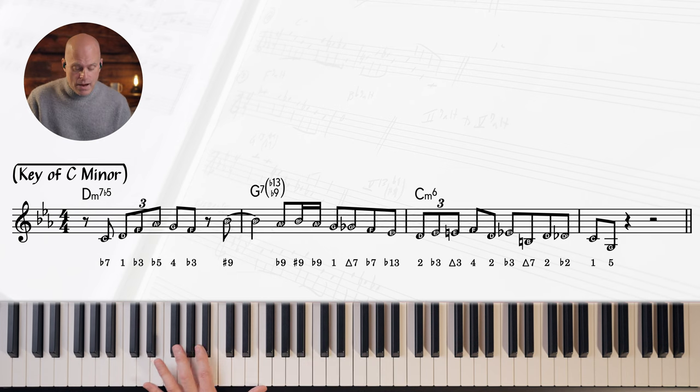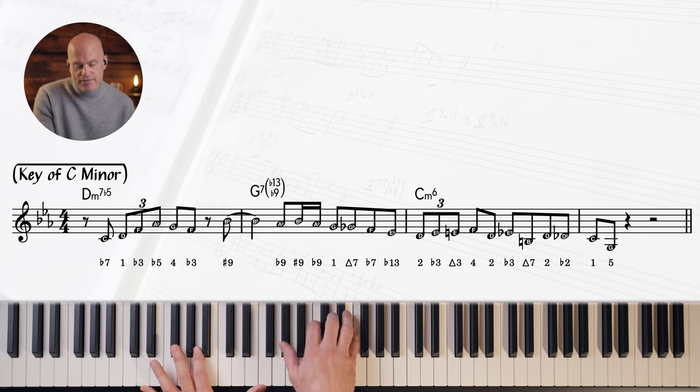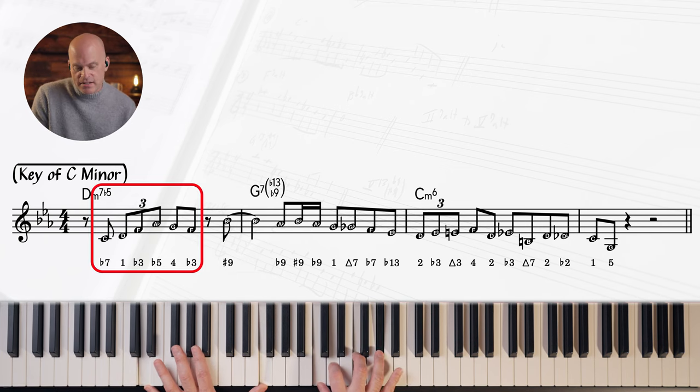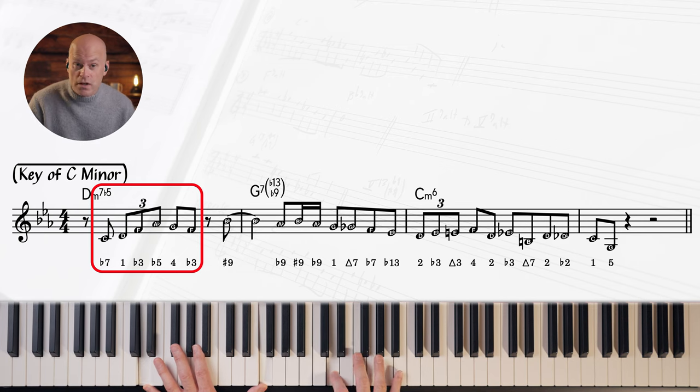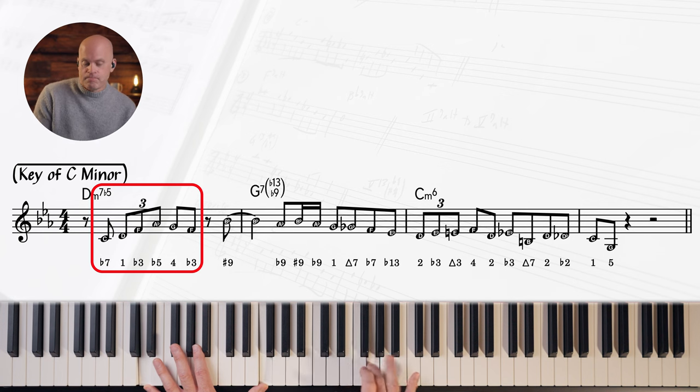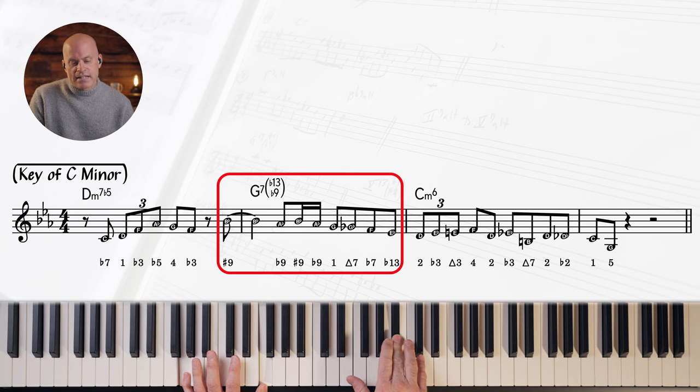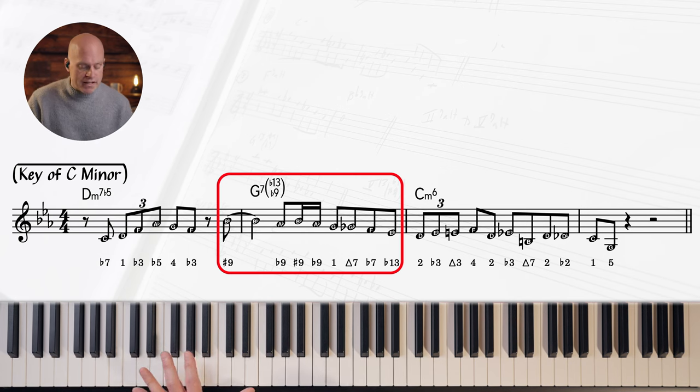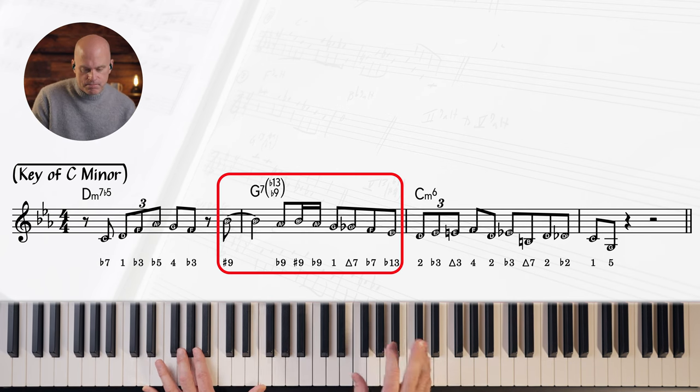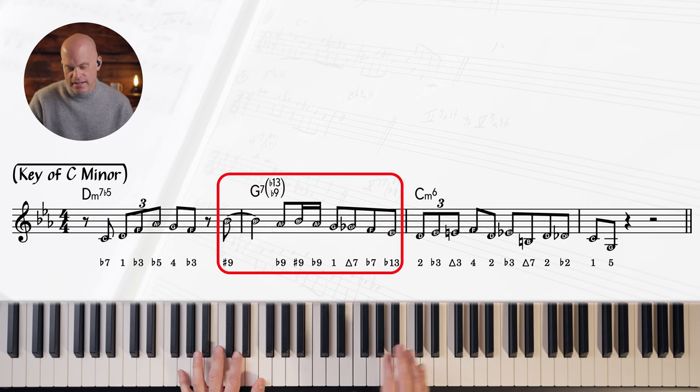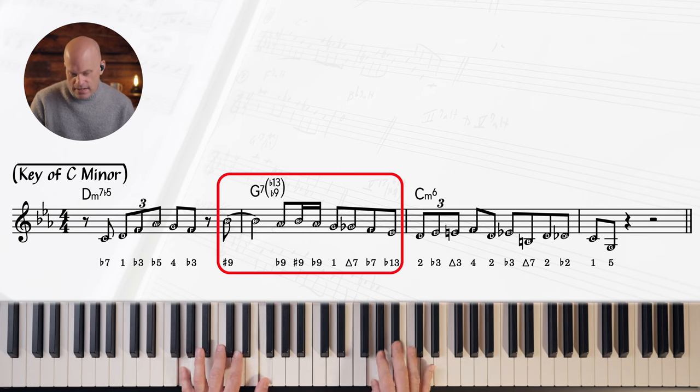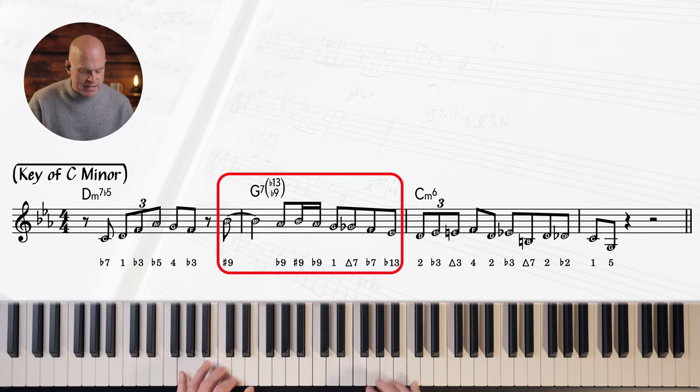So starting out, we have this D half diminished, but it's basically just running the arpeggio of the 7th chord. Flat 7, 1, flat 3, flat 5. And then just down the scale. Then it's anticipating that sharp 9 of G7. Nice ornamentation. This is very common. Flat 9, sharp 9. Down to the root. I mean, that's everywhere.